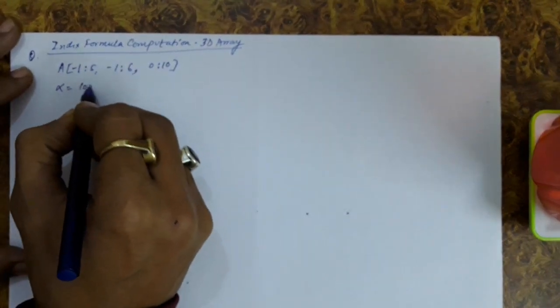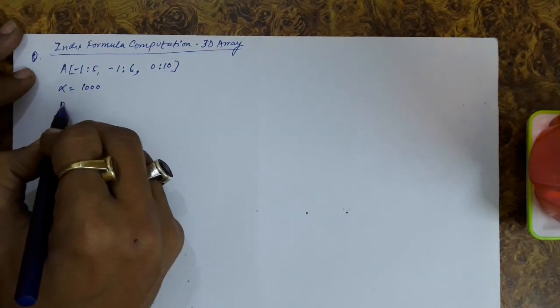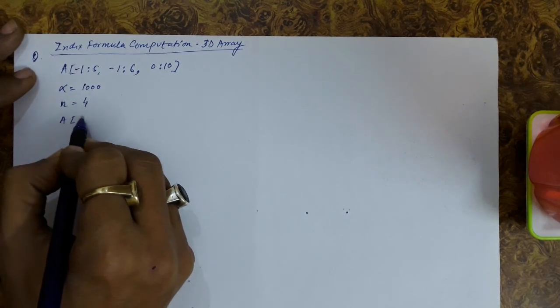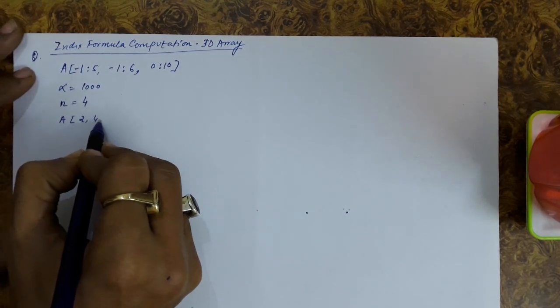Let's say the first element has an address 1000 and every element requires 4 bytes for the storage and you are interested in finding out the address of A246.